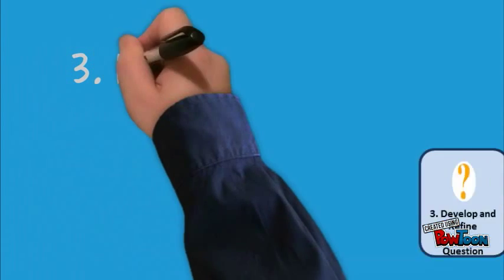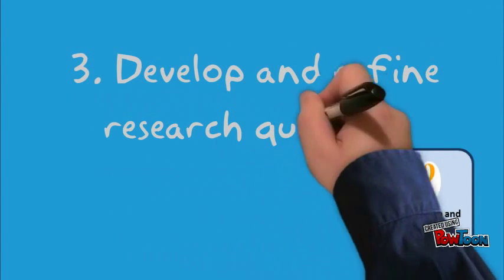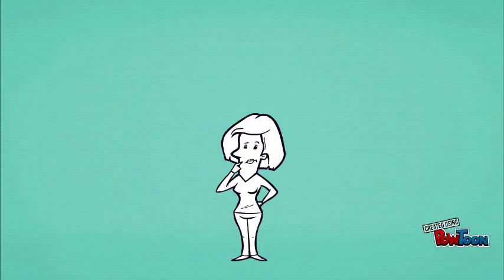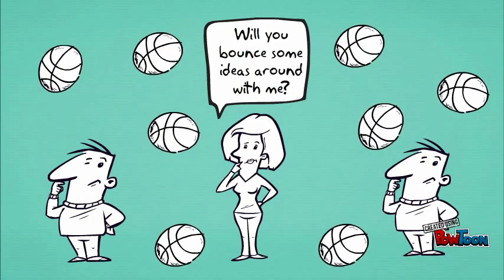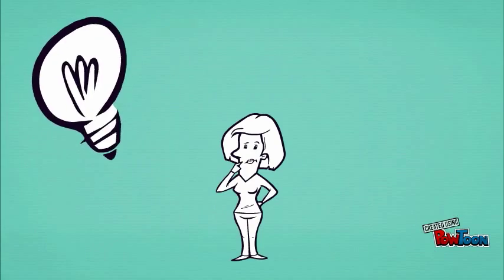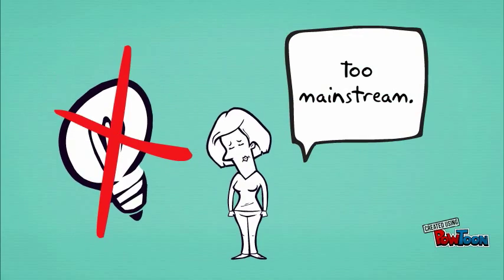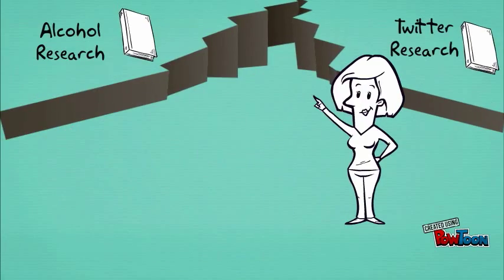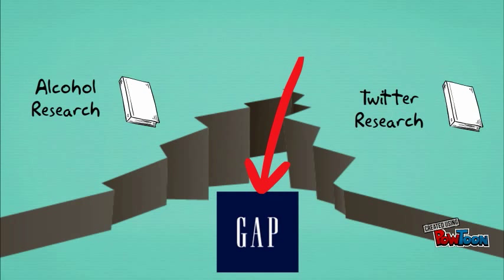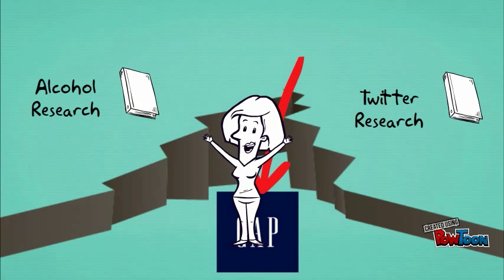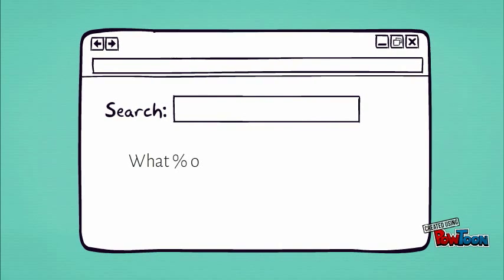Now you're ready to develop and refine your research question. You may take this time to share what you've learned and bounce ideas around with a mentor or peer. By this point, you may realize you need a slightly different research question because yours is already addressed in the literature. Maybe you noticed there was a gap in the literature regarding alcohol displays on Twitter. This is where you get specific — now you're going to zero in on the research gap you'll base your study on. Your new research question may become: what proportion of college students display alcohol references on Twitter?